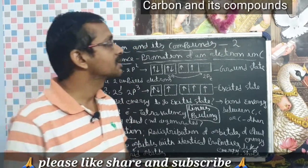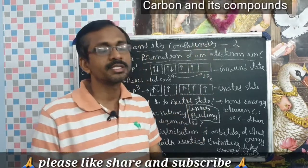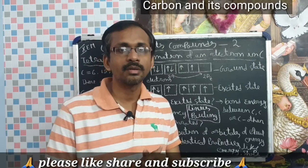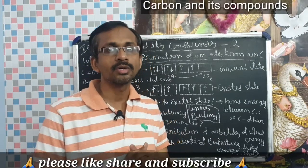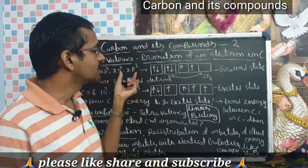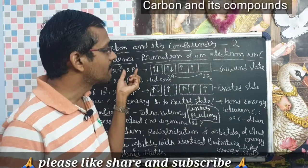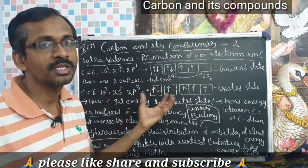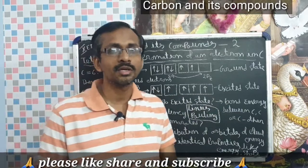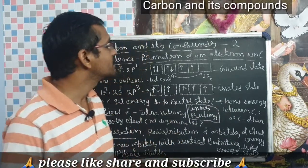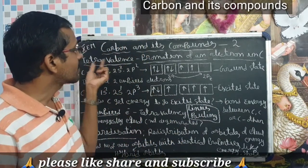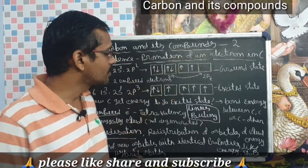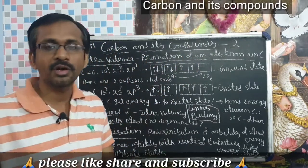In the previous class, in part 1, we discussed some important concepts of carbon — what is the carbon valency, and how carbon forms covalent bonds with other compounds. In this chapter, we learn about the tetravalency of carbon, the promotion of electrons, and hybridization of carbon atoms.